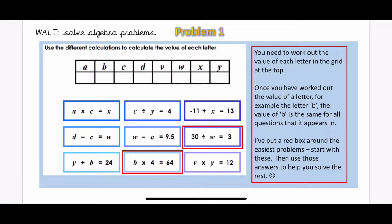The 2 easiest ones I've put in red boxes for you. So if we start with finding the value of W, so 30 divided by W equals 3. Have a think about what the value of W could be. Once you've figured that out, that will stay the same for W each time.